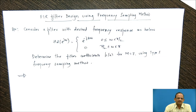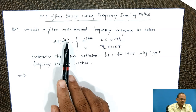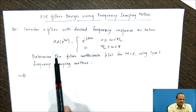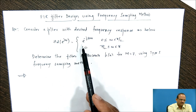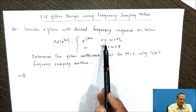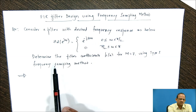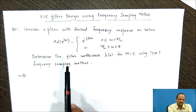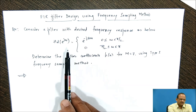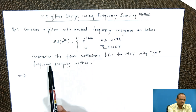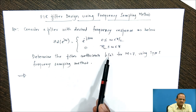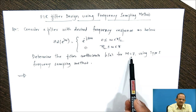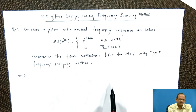Now let us consider this example. Consider a filter with a desired frequency response H_d(e^{jω}), which is equal to e^{-j3ω} for ω between 0 to π/2, and 0 for π/2 to π. For this given desired frequency response, we need to determine the filter coefficients h(n), where the filter size M is given as 7, using the Type 1 frequency sampling method.